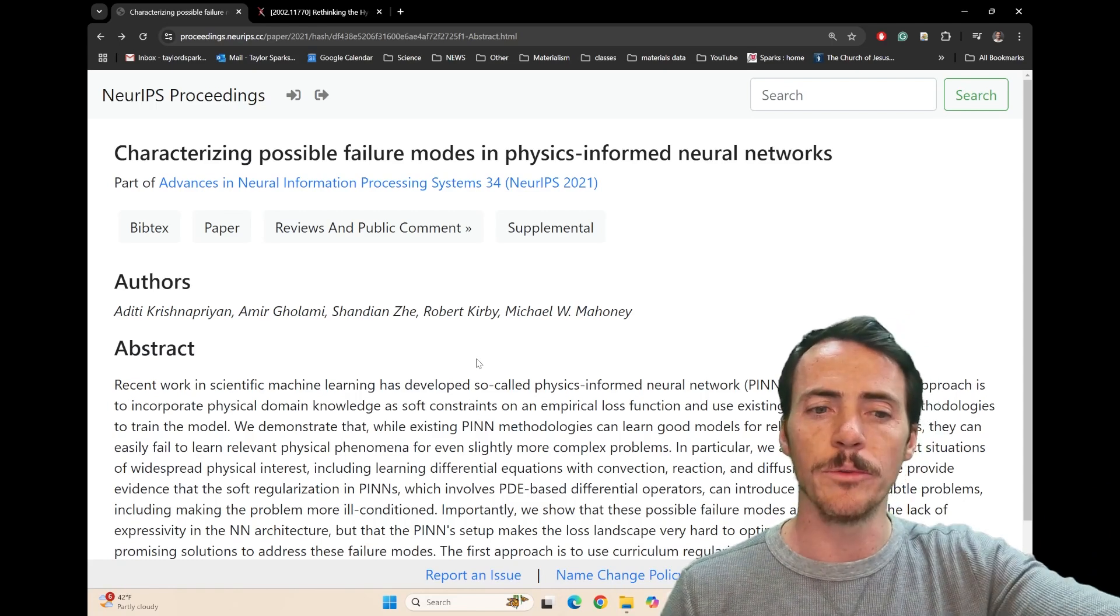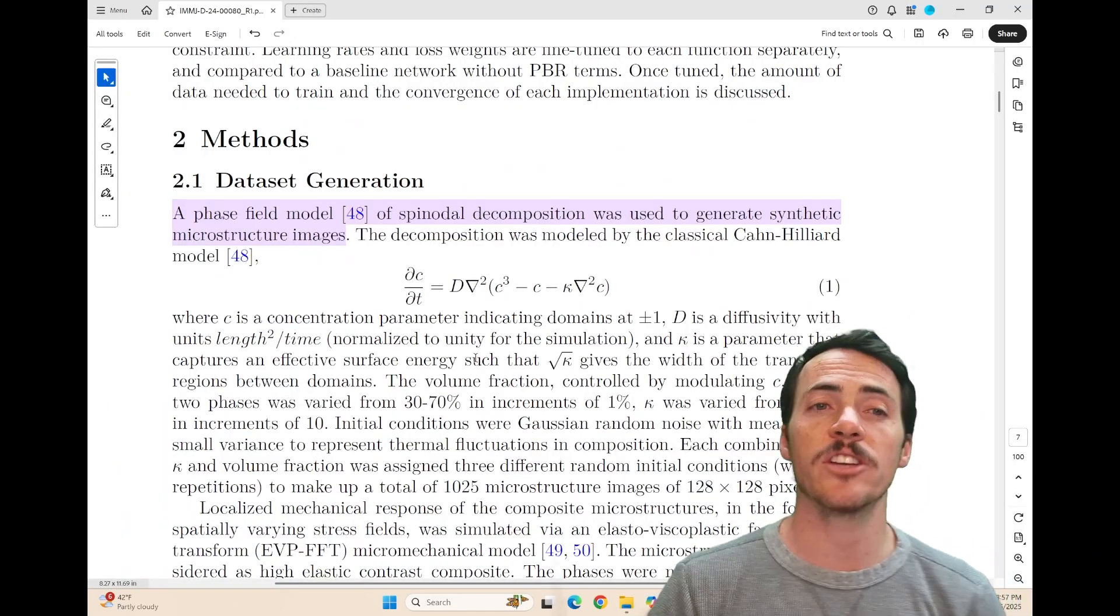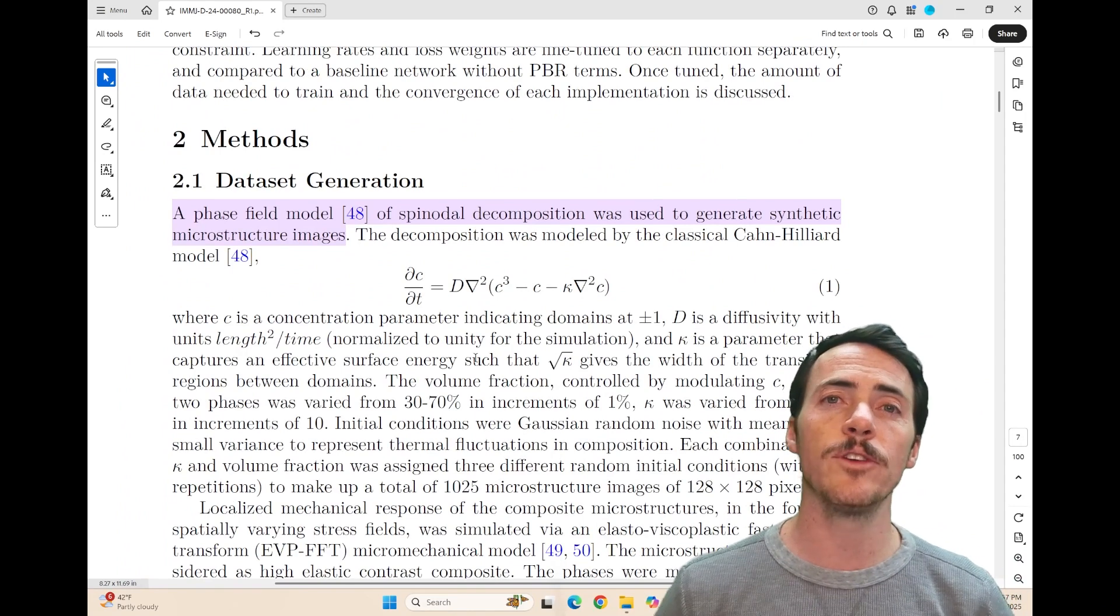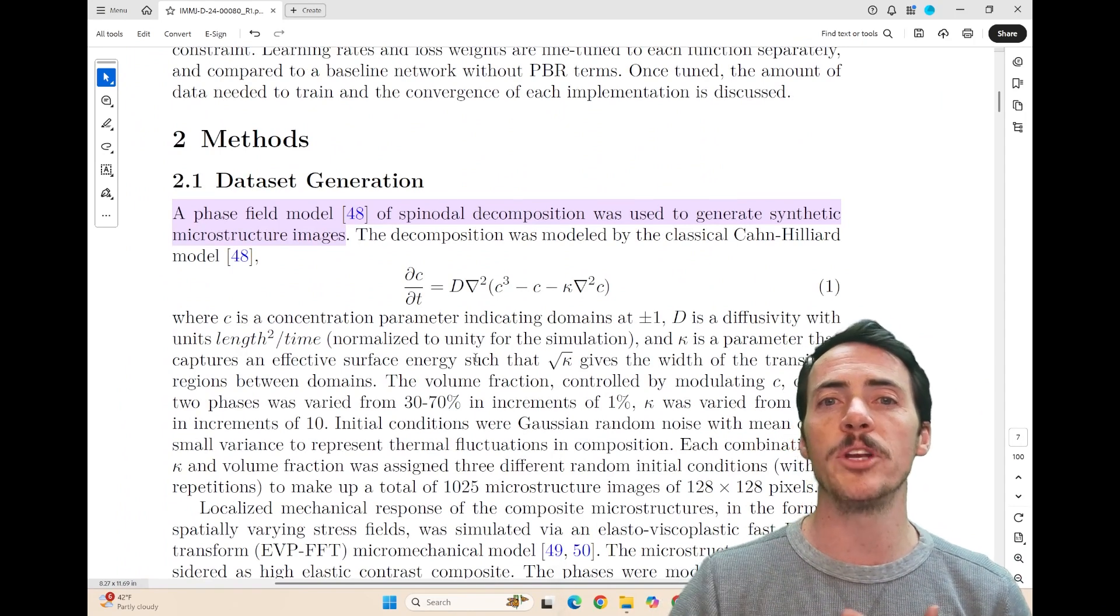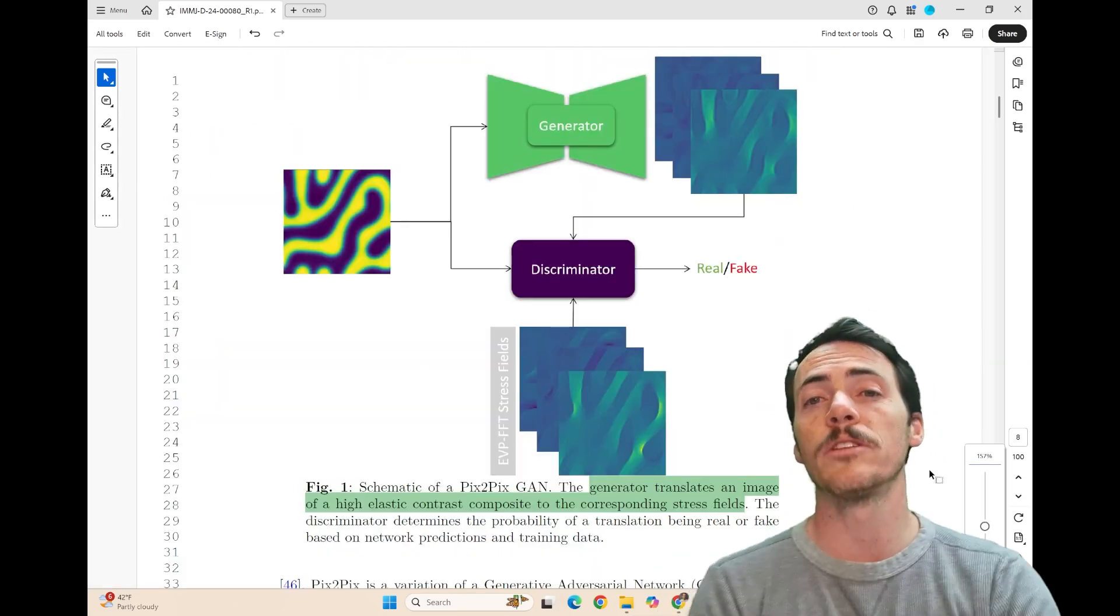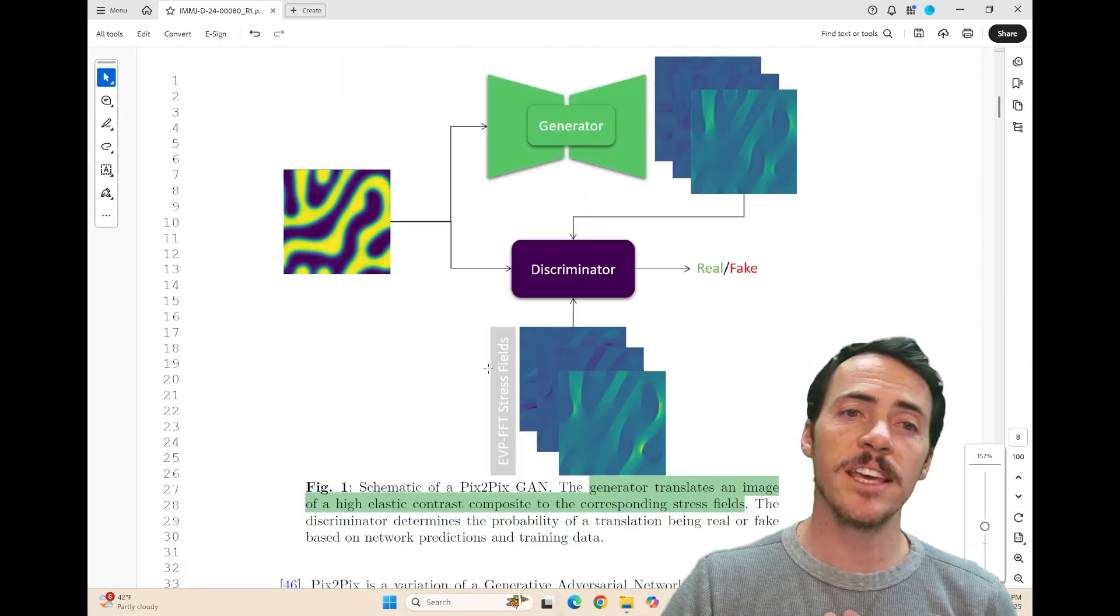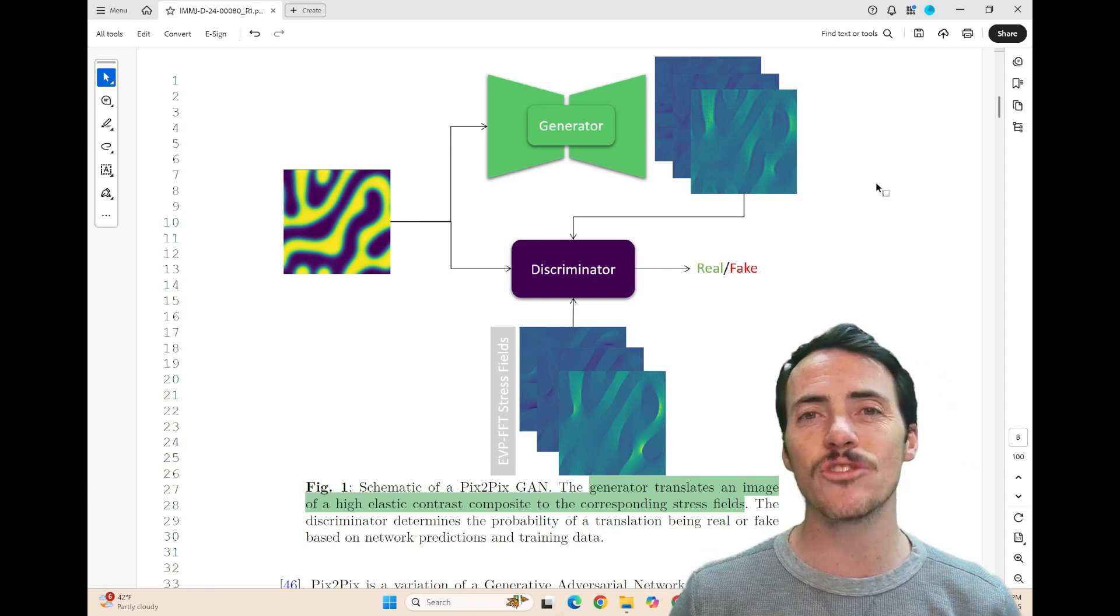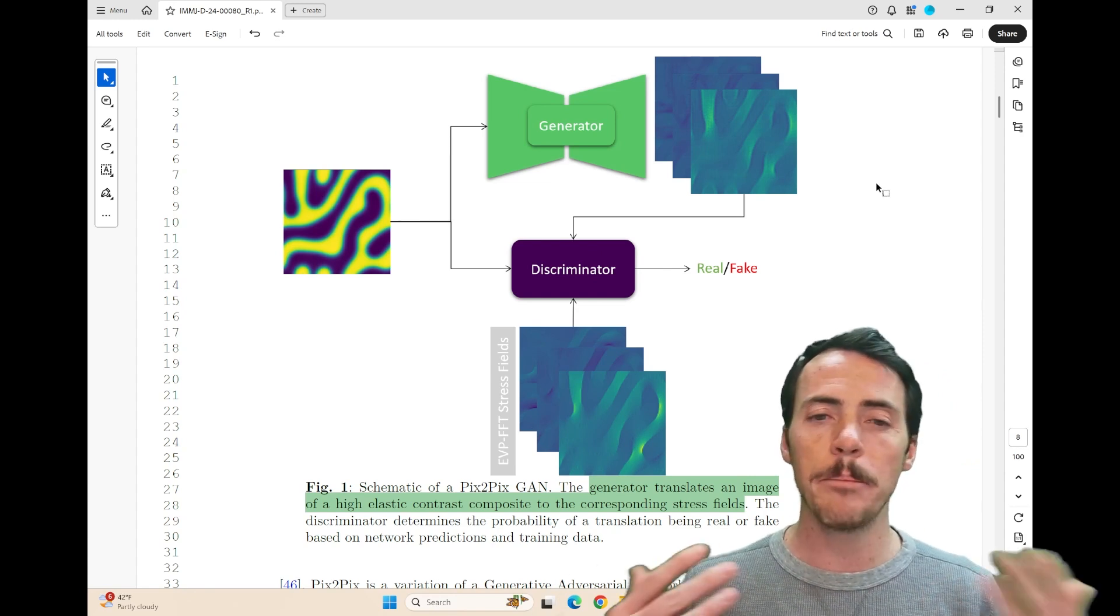So what did the authors actually do? Well, if you jump down here to the methods section, you see that they're going to generate data. They're going to do it with phase field modeling, and they're going to be modeling spinodal decomposition to generate microstructural images. Then they're going to build a model whose task is to take in an image and predict as an output what the corresponding stress field would be, and they're using PIX2PIX GAN.